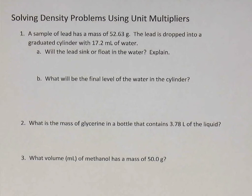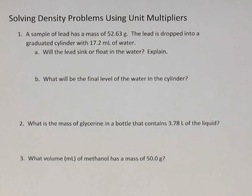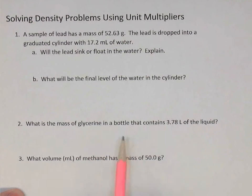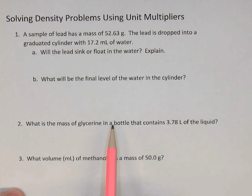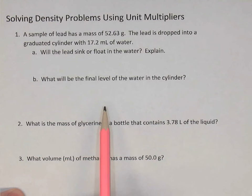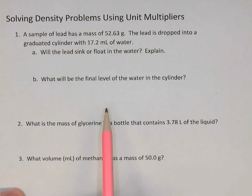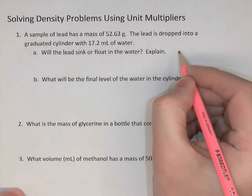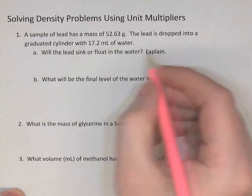If you don't have that worksheet, just look up the densities of the things as you need them. The first question is dealing with lead. We're told a sample of lead has a mass of 52.63 grams. It's dropped into a graduated cylinder that has 17.2 milliliters of water. Will the lead sink or float in the water? Well, we know that water has a density of 1.00 grams per milliliter.